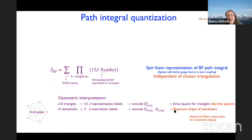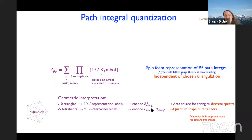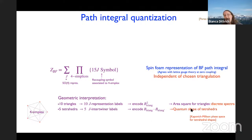There are furthermore intertwiner representation labels associated to tetrahedra, encoding information about inner products between two B-fields — very equivalent to looking at inner products between two SU(2) generators. These encode the quantum shape of tetrahedra. For a tetrahedron we have four areas and two angles to parametrize the full geometry, but it turns out these two angle parameters are non-commuting, arising from the geometry being encoded in B-fields which are Lie algebra generators of a non-abelian group.